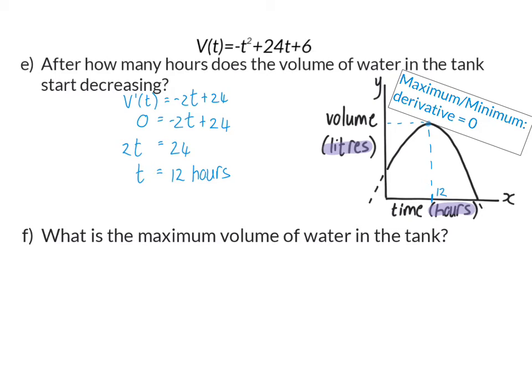Question F: What is the maximum volume of water in the tank? We just calculated that the maximum volume will occur at 12 hours. To determine this specific volume, we take our volume formula and substitute 12 into t, because the original equation gives the volume. This gives us 150 liters as the maximum volume of the tank.